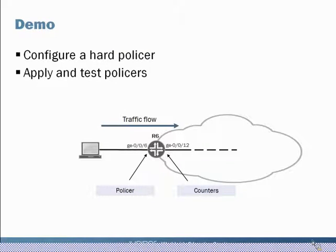That takes us to the demo portion of this learning byte. We have a small lab network with a host that will send traffic through the R6 router and into the network. We'll apply a policer on the ingress interface GE-0/0/6, and watch counters and use show commands on the egress side to confirm whether traffic is getting through or being policed.